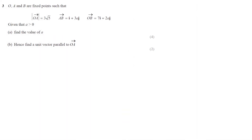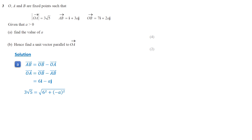In this question, we are working with vectors. Vector AB equals vector OB minus vector OA. Rearranging, we have vector OA equals vector OB minus vector AB. Substituting the values, we get 6i minus Aj. The length of vector OA is 3 root 5. Using the formula for the length of a vector, we get 3 root 5 equals the square root of 6 squared plus A squared. Simplifying, we get A squared equals 9, and thus A equals 3.